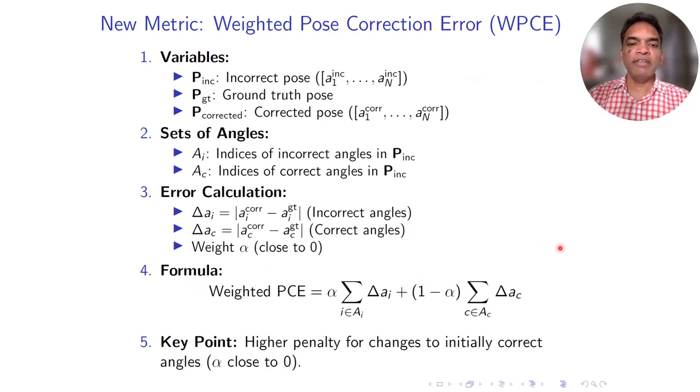Our evaluation metric is PCP, standing for percentage of correct poses in a given test set. Here we define a tolerance threshold based on two errors. One is the standard mean absolute difference from the ground truth pose to the corrected pose—the absolute difference of joint angles in our case.